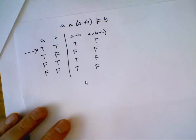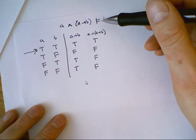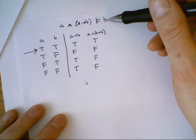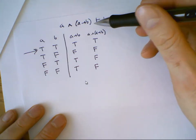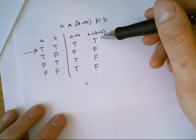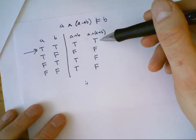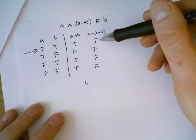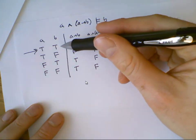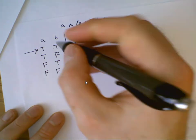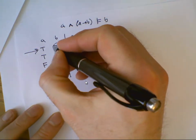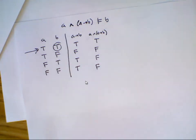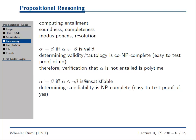Now let's check if B is entailed by our knowledge base. We look at all the models where our KB is true — which is just that one world — and we see that B is true there. So B is entailed by our KB.